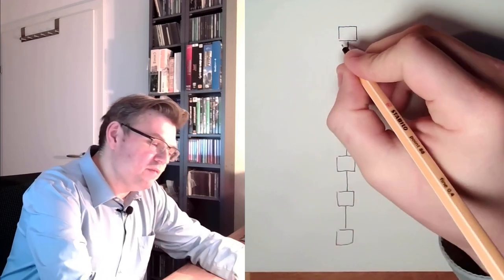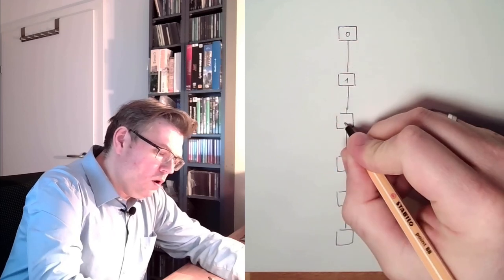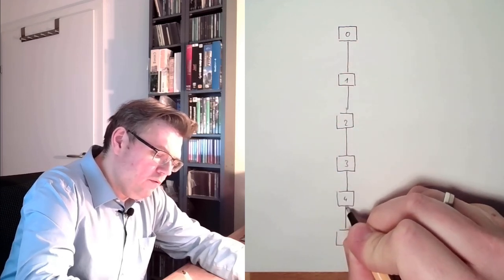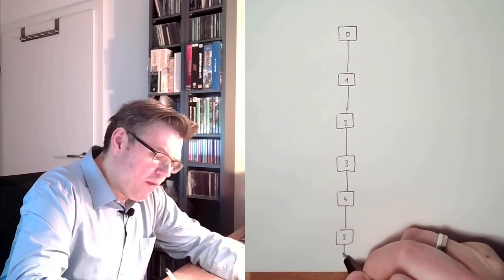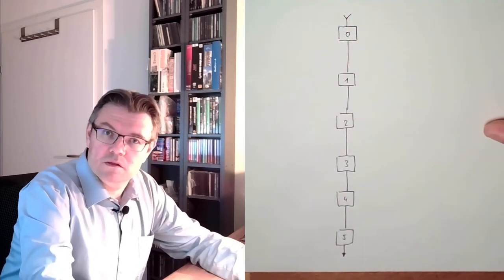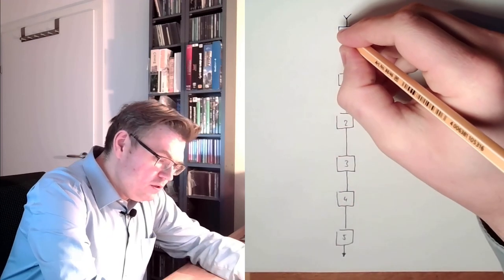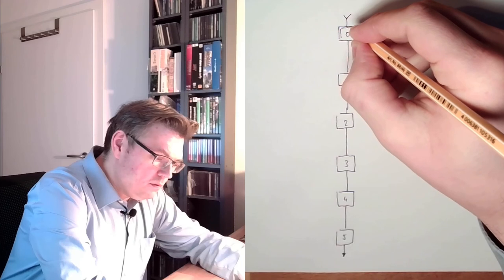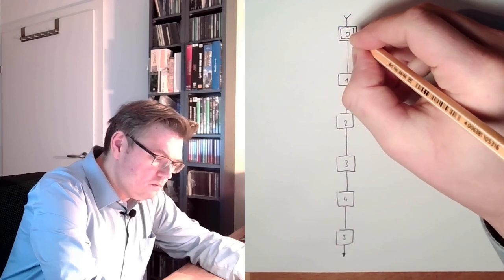Usually the steps have numbers. 0, 1, 2, 3, 4, 5. They might go to somewhere else or they might come from somewhere else. The start step or initial step is usually marked with a double line or a double frame.